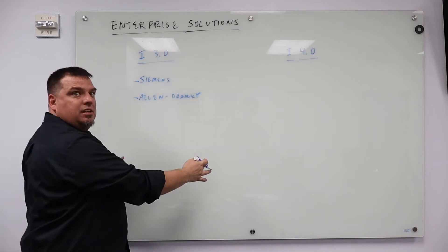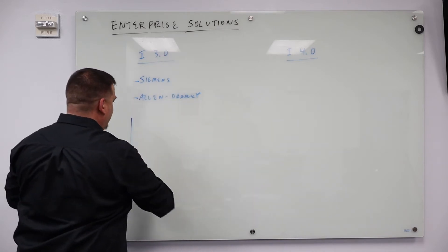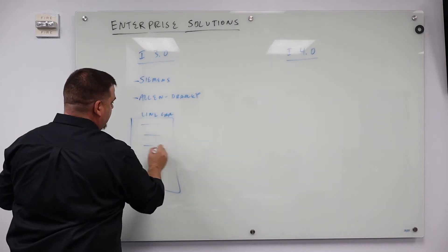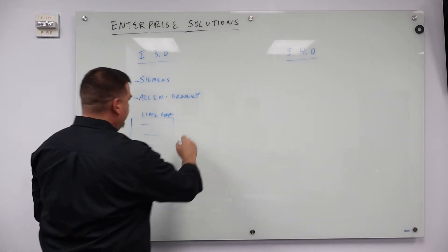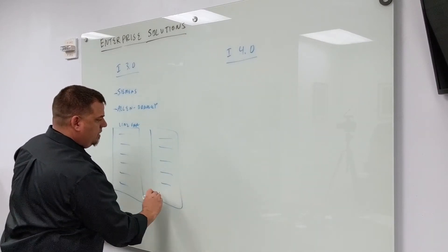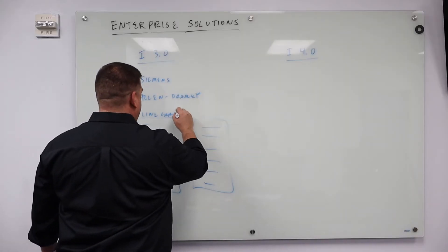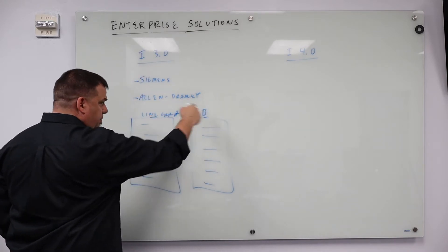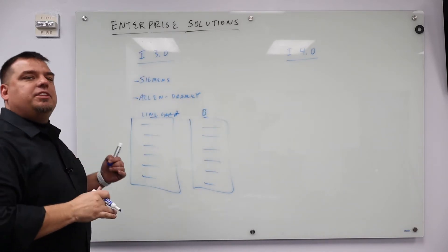So each of the vendor reps have their line cards. I think they actually call it a line card, and it has the list of all the products that they sell. Same thing here. These are the distributors - this is line card A and line card B. This is distributor A or distributor B. That's a distributor of the Industry 3.0.